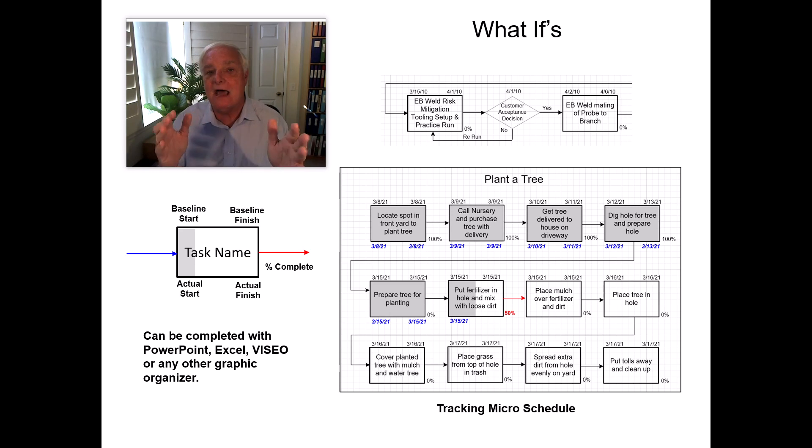The blue dates underneath are the actual start and finish dates. So remember the top is the baseline start and finish date and then progressively as you're filling the chart in, you get a good sense of if you're on track, on schedule, and we call this micro-scheduling.